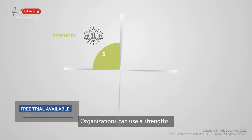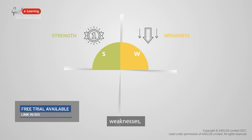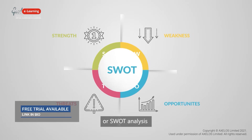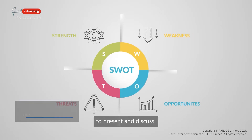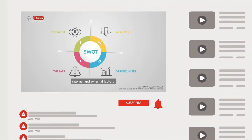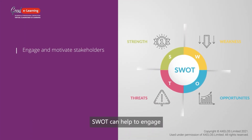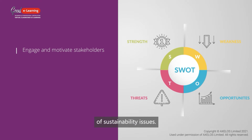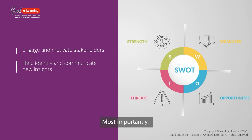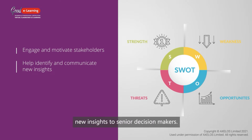Organisations can use a strengths, weaknesses, opportunities and threats, or SWOT, analysis to present and discuss internal and external factors that define or affect the organisation's positioning in a sustainability context. SWOT can help to engage and motivate stakeholders, particularly those with a limited knowledge of sustainability issues. Most importantly, it can help to identify and communicate new insights to senior decision-makers.